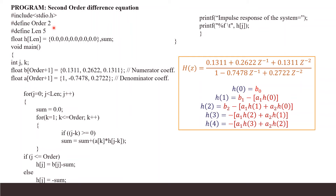In the program, the order is defined as 2 and the length of the output is set to 5, limiting the number of points — though you can have more. An array named h of size determined by the length is declared; it is of type float and initially contains 5 zeros. There is also a variable of type float called sum. Here b represents numerator coefficients and a represents denominator coefficients, consistent with our notation.